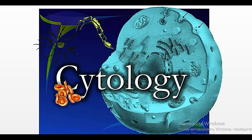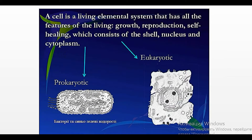All cells, depending on the presence of a nucleus, can be divided into prokaryotic and eukaryotic. A cell is a living elemental system that has all the features of living things — growth, reproduction, and self-healing — and consists of a shell, nucleus, and cytoplasm. We will focus on eukaryotic cells only, because the human body is composed entirely of eukaryotic cells, which contain a nucleus. Some structures do not contain nuclei and will be called acellular structures.